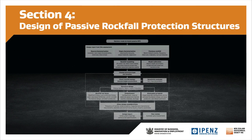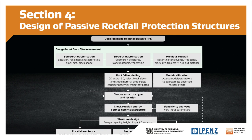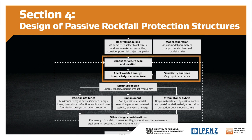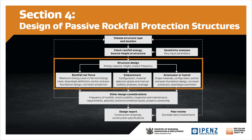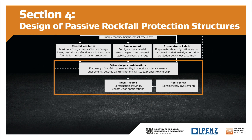Section 4 uses this flowchart to describe the design process for passive rockfall protection structures. This involves the following steps: selection of the design boulder; modeling of rockfall trajectories; selection of the structure type and location; the detailed design of the selected structure type; and consideration of other design factors.